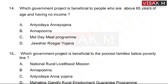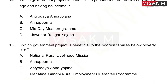The right answer for the project for people above 65 years with no income is option B, Annapurna. Following question: Which government project is beneficial to the poorest families below the poverty line? Option A, National Rural Livelihood Mission.